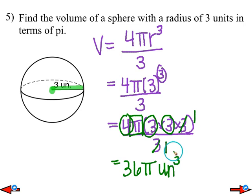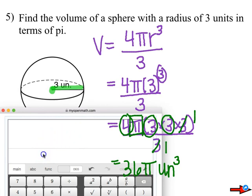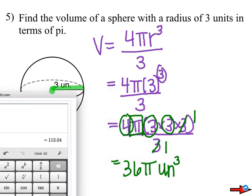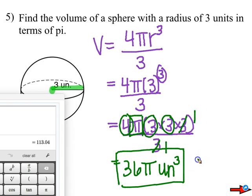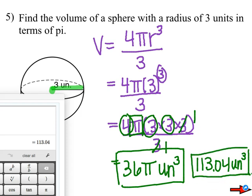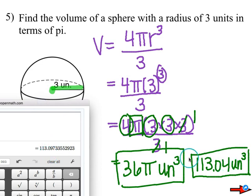Let's also approximate. Using the calculator: 36 times 3.14 gives us 113.04. So 113.04 units cubed is one answer, and 36 pi units cubed is the other. Notice that unlike area — where units are squared — volume means the units are cubed. As always, please make sure you read the instructions, because they might ask you to use 3.14 for pi, or the pi symbol itself. Your answers will vary slightly depending on the instructions.